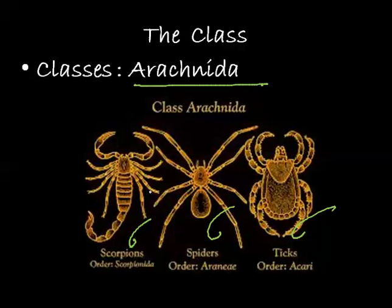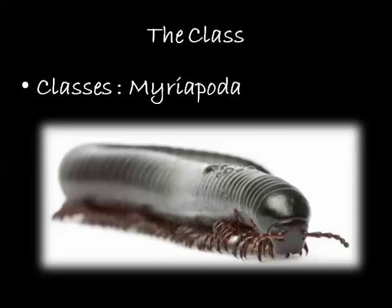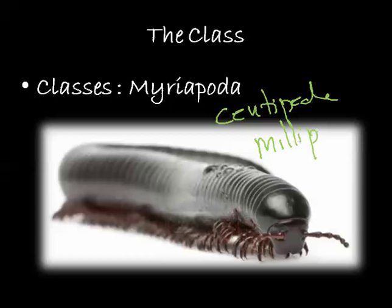The other class is Arachnida, where we have insects like scorpions, spiders, and ticks — these are examples of the Arachnida class. The next class is Myriapoda, where we have examples like centipede and millipede.